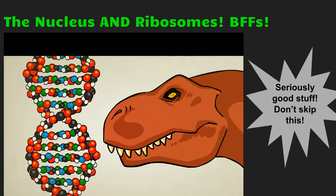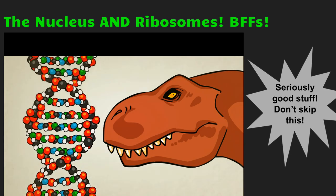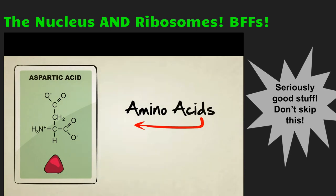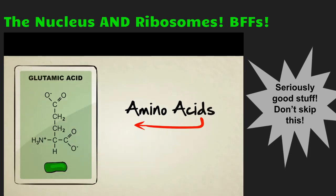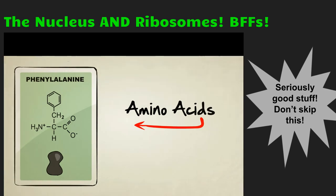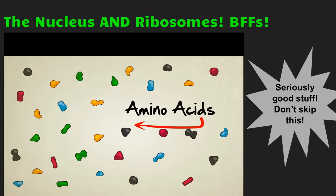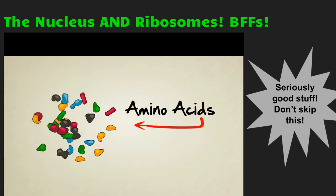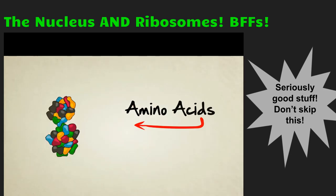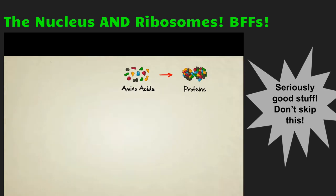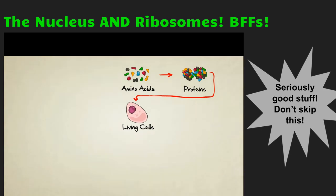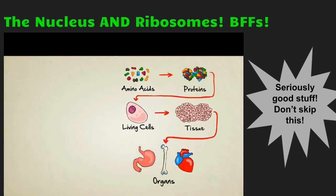To help answer that question, let's take a quick look at amino acids. Amino acids are tiny chemicals inside our bodies, often referred to as the building blocks of life. There are about 20 different kinds, each with their own unique shape. They can be attached to each other, kind of like Legos, to produce an endless variety of larger particles known as proteins. Amino acids make up proteins. Proteins, along with other chemicals, combine to form living cells. Cells make up tissues. Tissues make up organs. And organs combine to form living creatures like you and me.